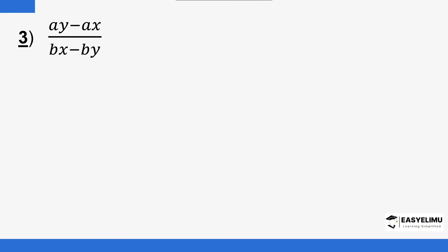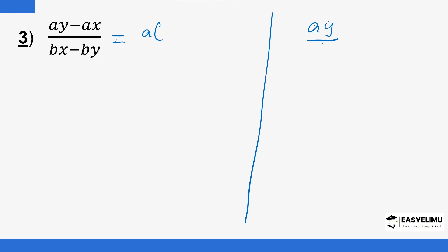We have another example. Here the common factor in the numerator is a, and we divide each term by a. So a·y divided by a is y, minus a·x divided by a is x. This gives the bracket (y − x) for the numerator after factoring out a.